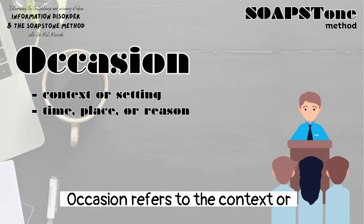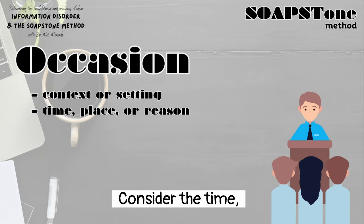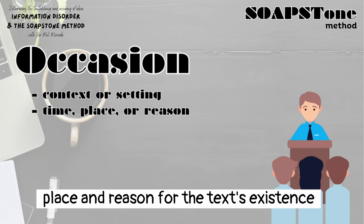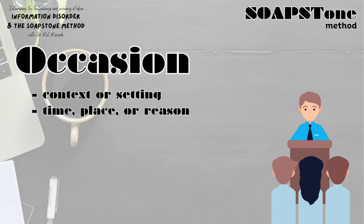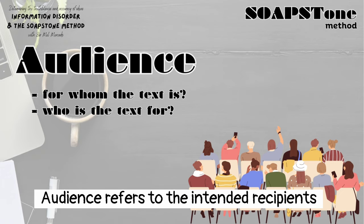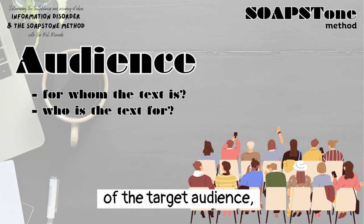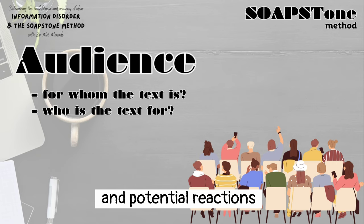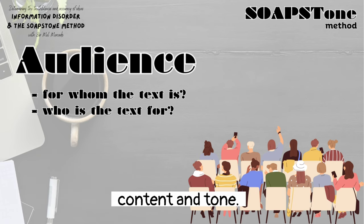Occasion refers to the context or setting in which the text was created or delivered. Consider the time, place, and reason for the text's existence, such as a political rally, a conference, or a response to a specific event or issue. Audience refers to the intended recipients or readers of the text. Analyzing the characteristics of the target audience—their knowledge, beliefs, values, and potential reactions—helps us evaluate the effectiveness of the text's content and tone.